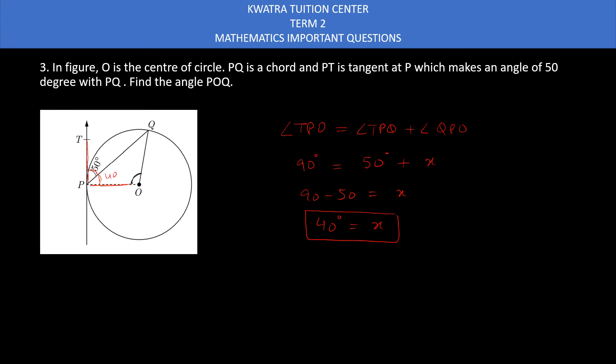Now what I can see is we have to find this angle, but we can easily find the value of this. How? Because OP is the radius, OQ is the radius, so we know in an isosceles triangle the base angles are equal. So angle QPO is equal to OQP which is equal to 40 degree.